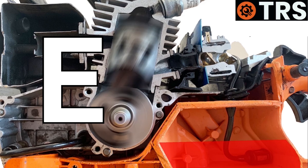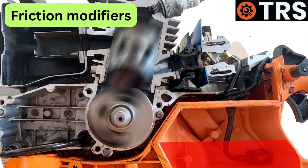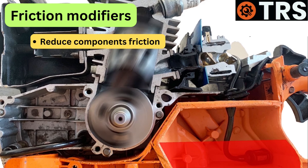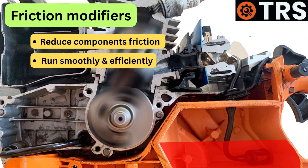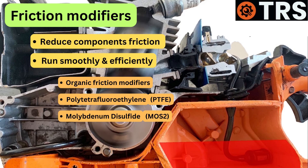E: Friction modifiers. By reducing friction between engine components, friction modifiers make engines run more smoothly and efficiently. Some friction modifiers include organic friction modifiers, polytetrafluoroethylene, or PTFE, molybdenum disulfide, MoS2, as well as organic esters.